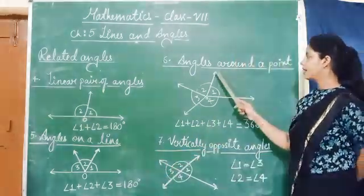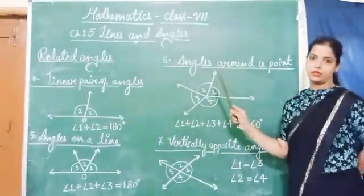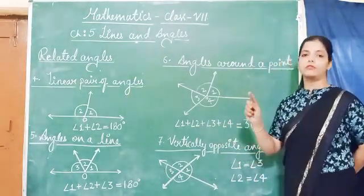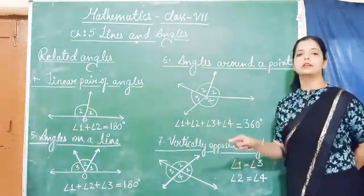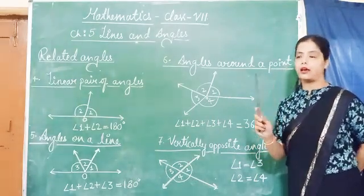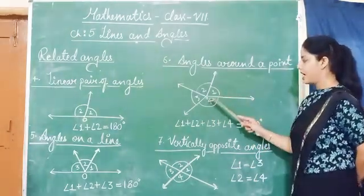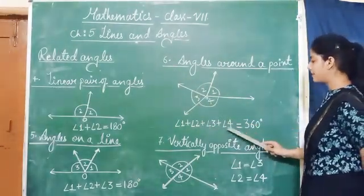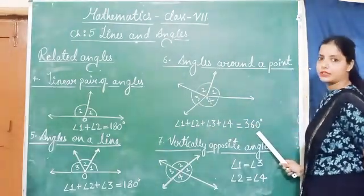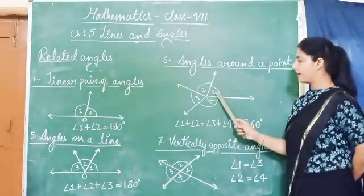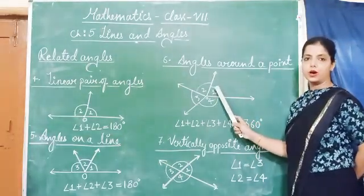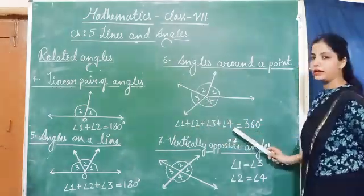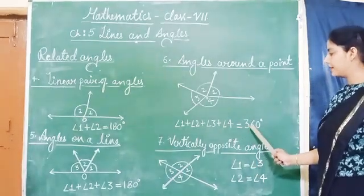Next is angles around a point. When we move around a point, we get a circle, and a circle represents 360 degrees. If we take various angles around a point, their sum is always 360 degrees. Here, we have taken four angles — angle 1, 2, 3, and 4 — and the sum of all four angles is 360 degrees.